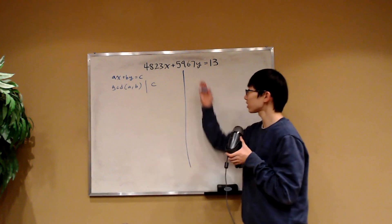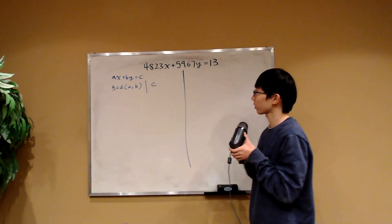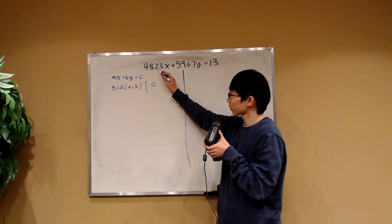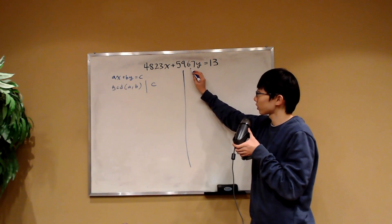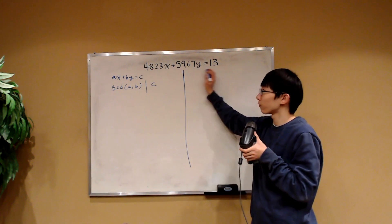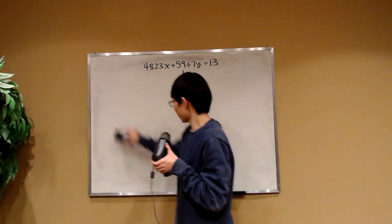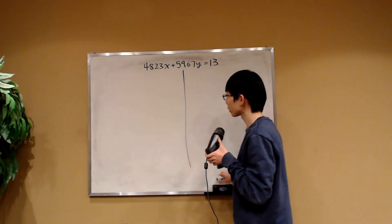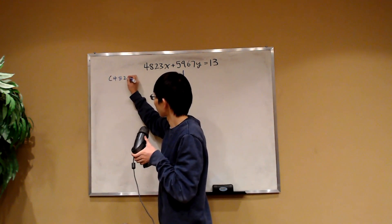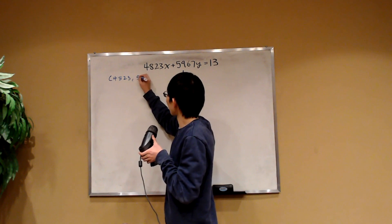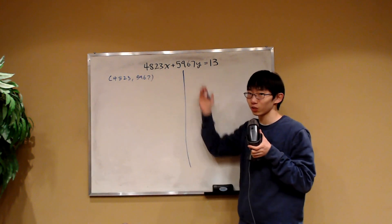So for this equation to even have a solution for x and y, we must have that the greatest common factor of 4,823 and 5,967 successfully divides 13. Our goal to start off is to first compute that greatest common factor, just to see if there even is a solution.